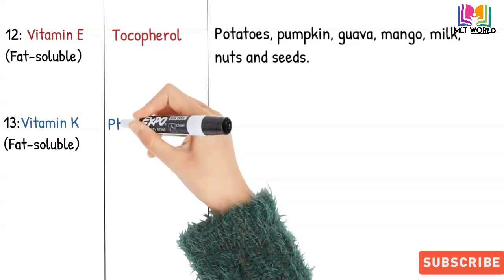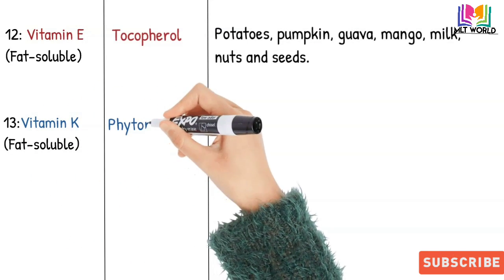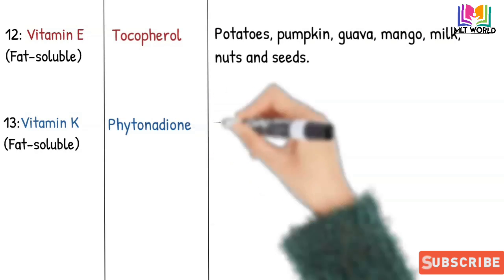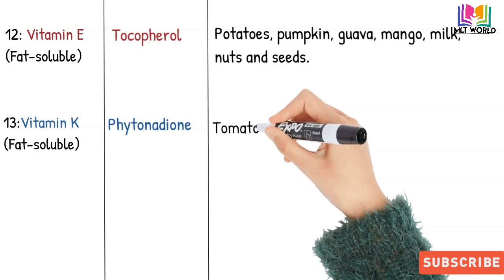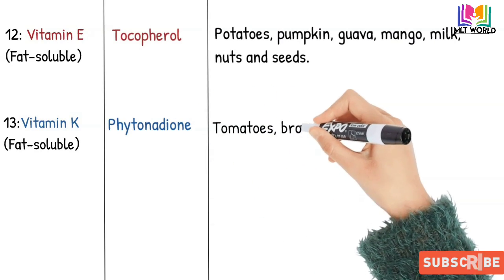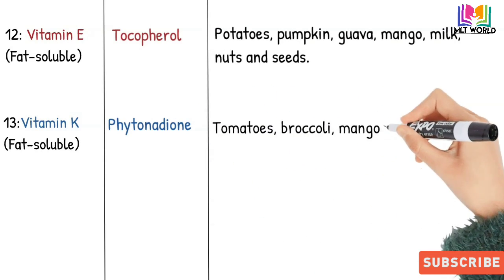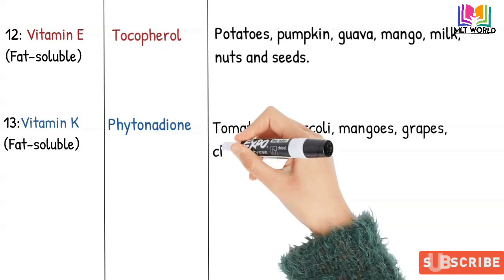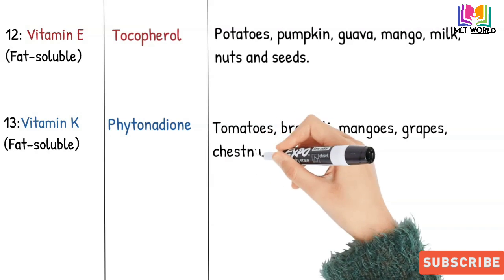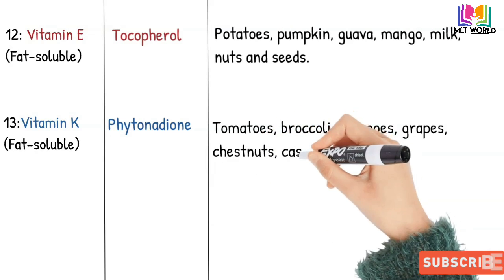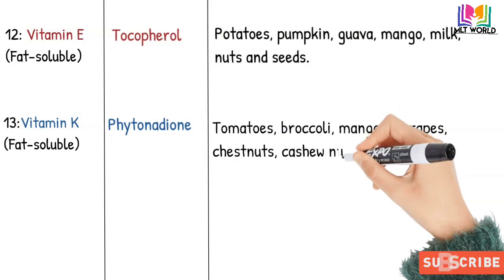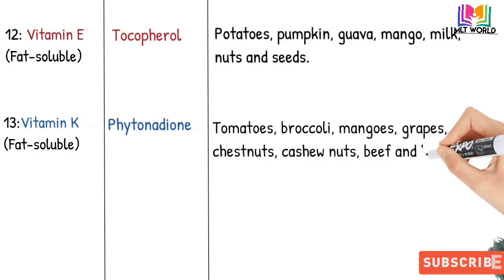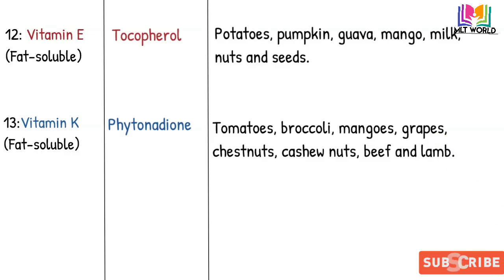Next is Vitamin K, which is also a fat-soluble vitamin. Its scientific name is phytonadione. Sources include tomatoes, broccoli, mangoes, grapes, chestnuts, cashew nuts, beef, and lamb.